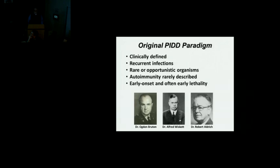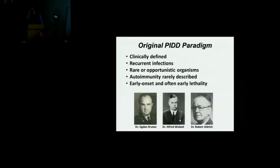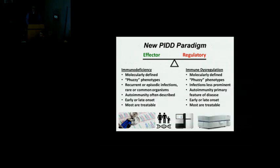The original paradigm of primary immune deficiency diseases was driven by astute clinicians — Bruton, Wiscott, Aldrich — who identified patterns of disease. Typically these were patterns of infections, often with rare or opportunistic organisms. Autoimmunity was rarely described, partly because this was prior to having many antimicrobials — these patients would get sick with unusual infections and die, so they never had a chance to develop autoimmunity. Onset was early and lethality was typically early as well.